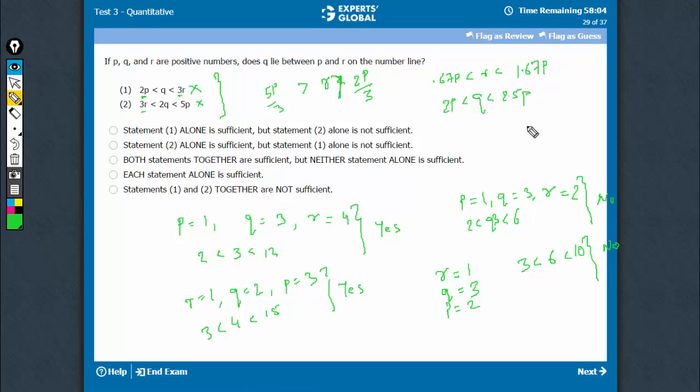We get that q is definitely greater than p and see, the highest value of r is also only 1.67p, which is less than 2p, right? And therefore, I know that q is greater than r also. If q is greater than p, q is greater than r, q is the highest, that means. If q is the highest, q cannot lie between p and r. So, combining, we get no as an answer. So, see, it's the right choice.